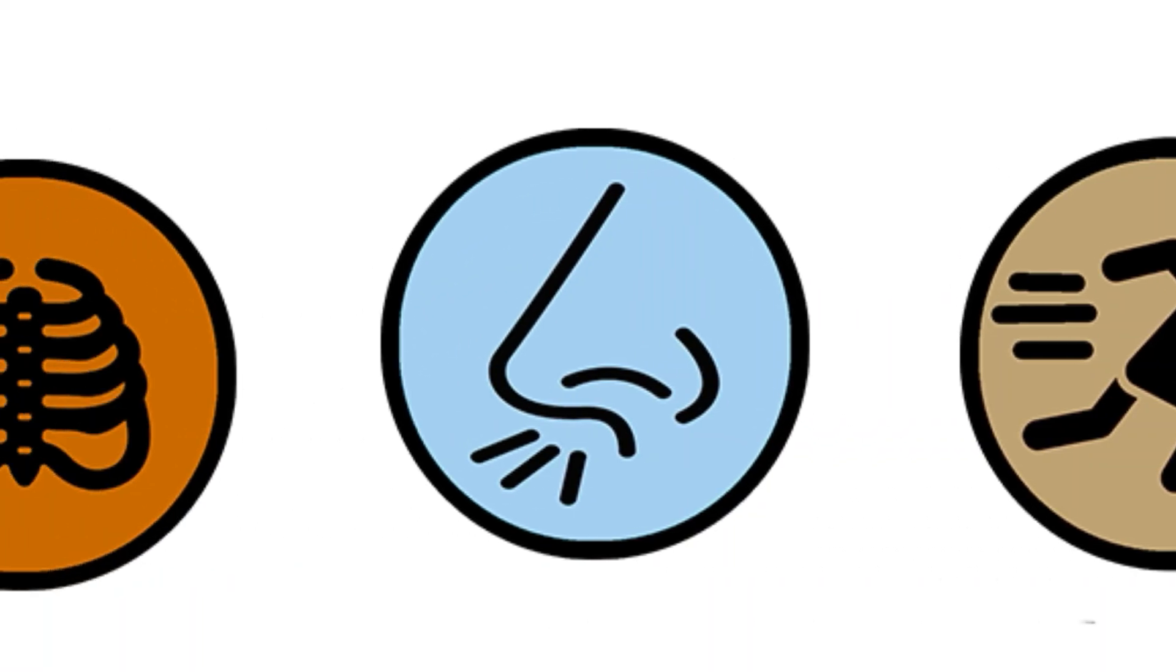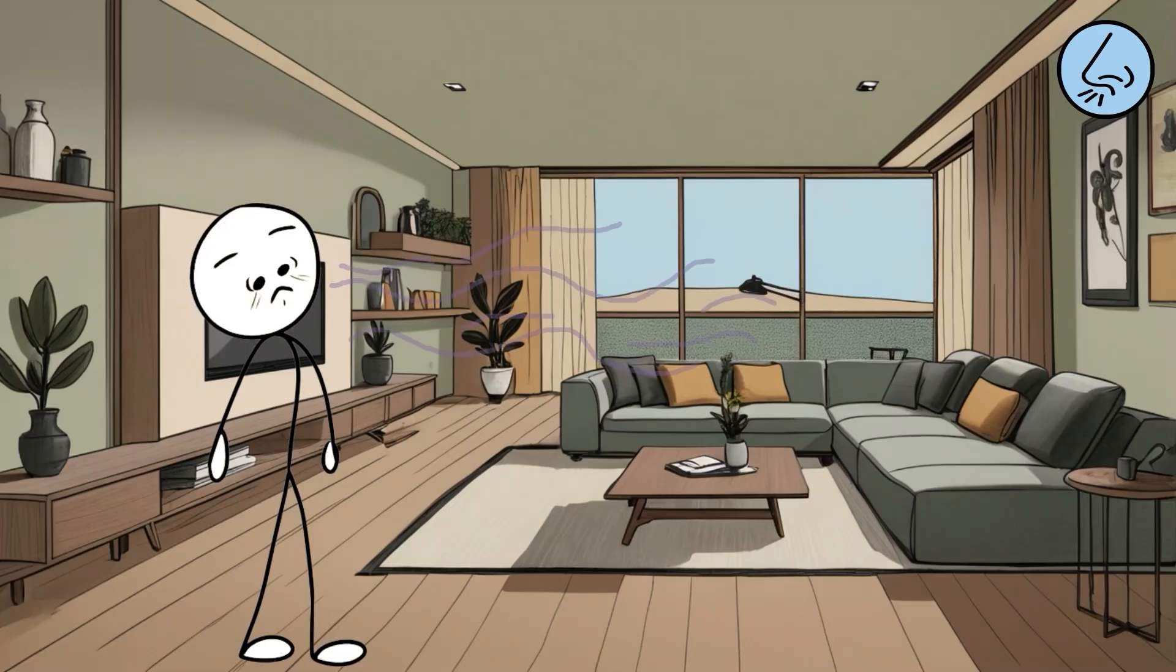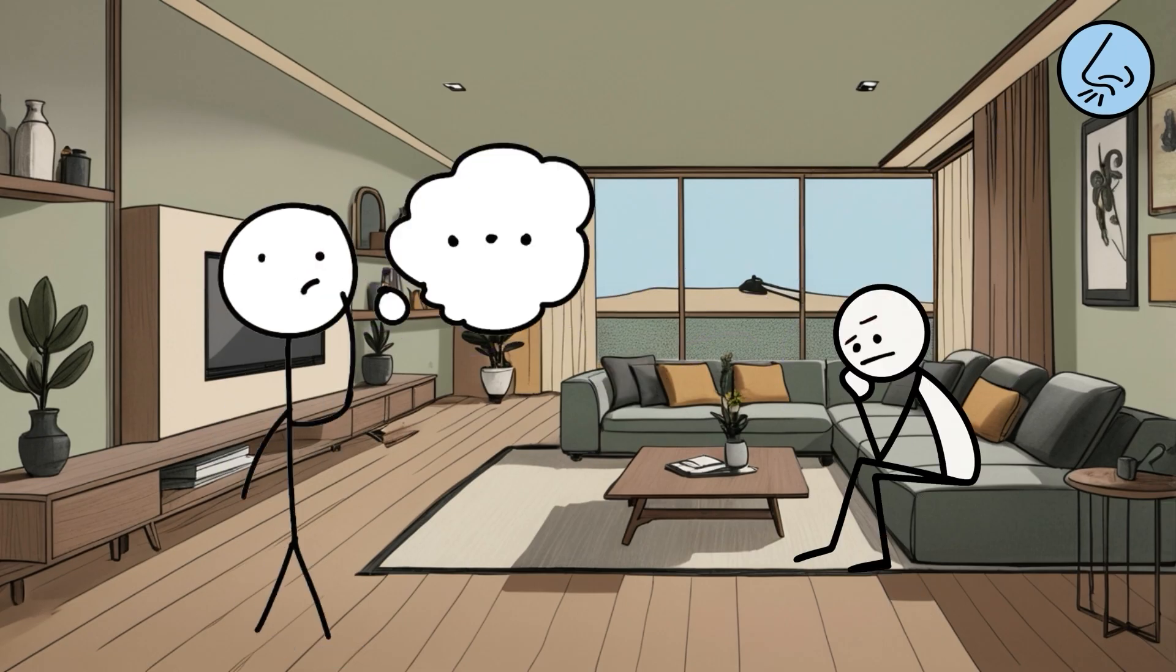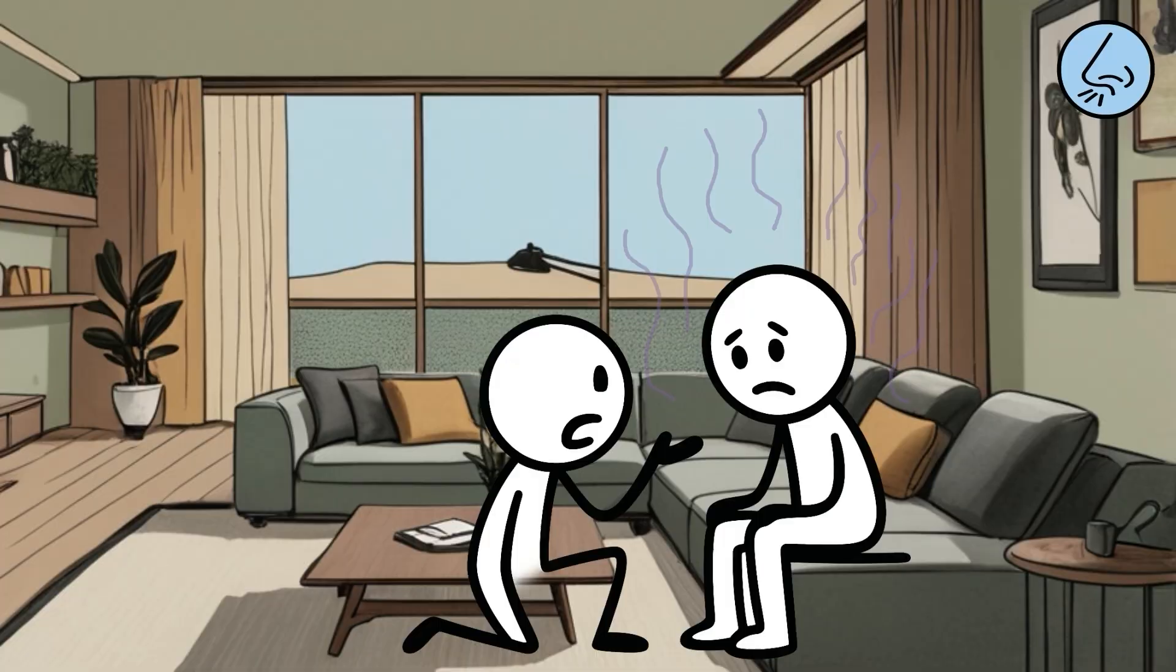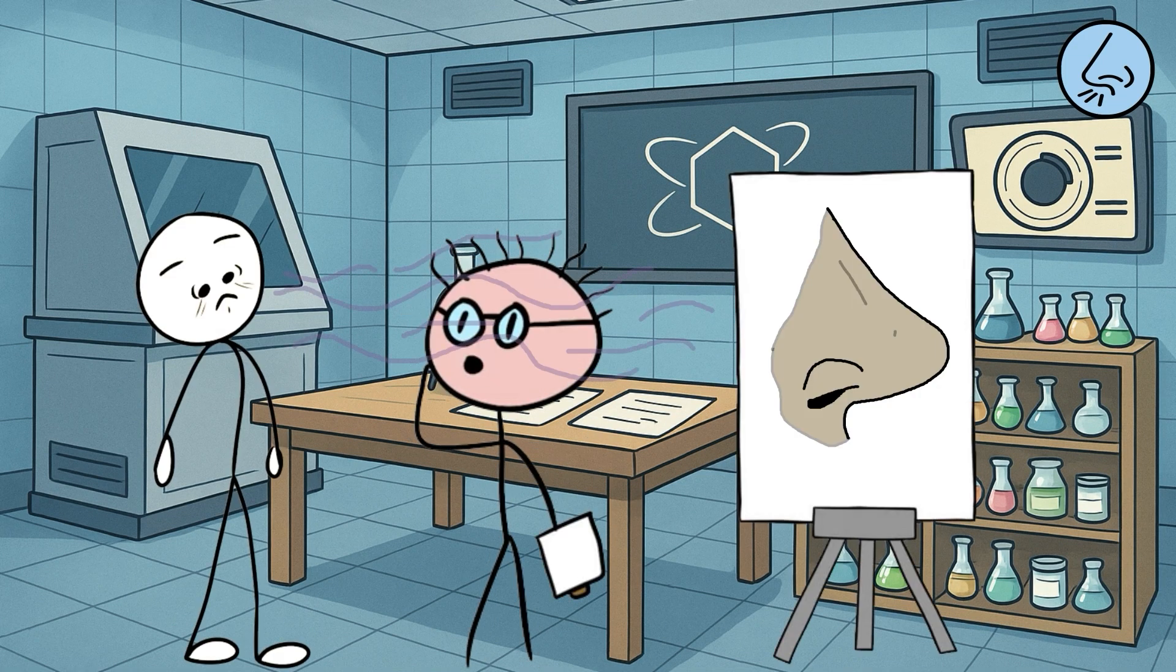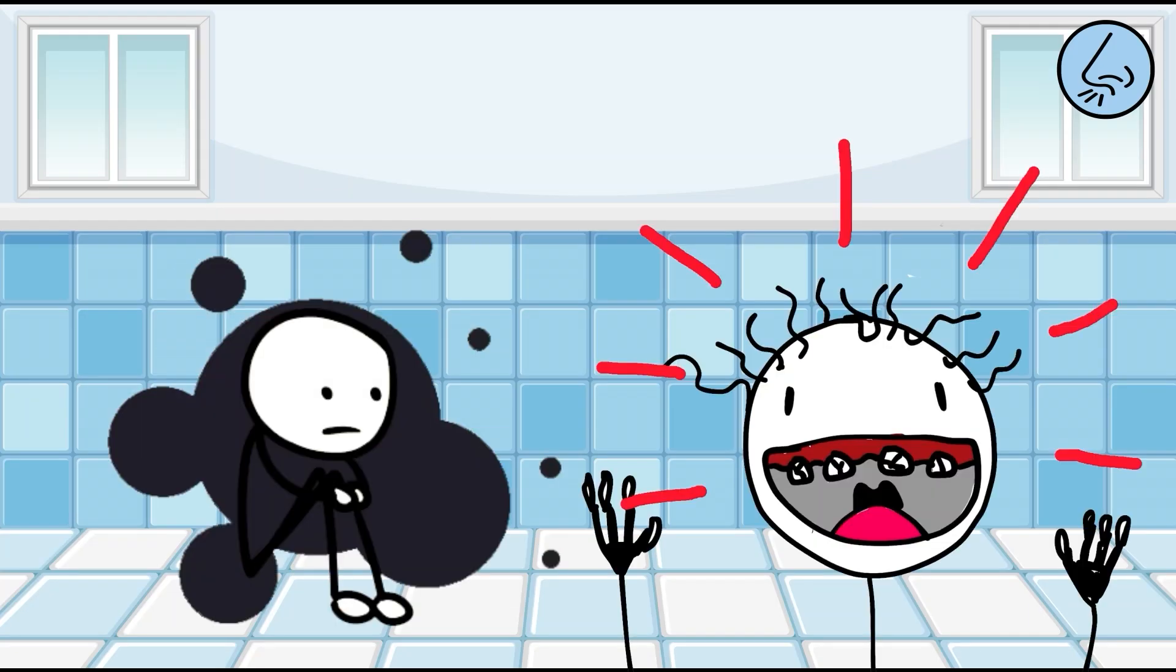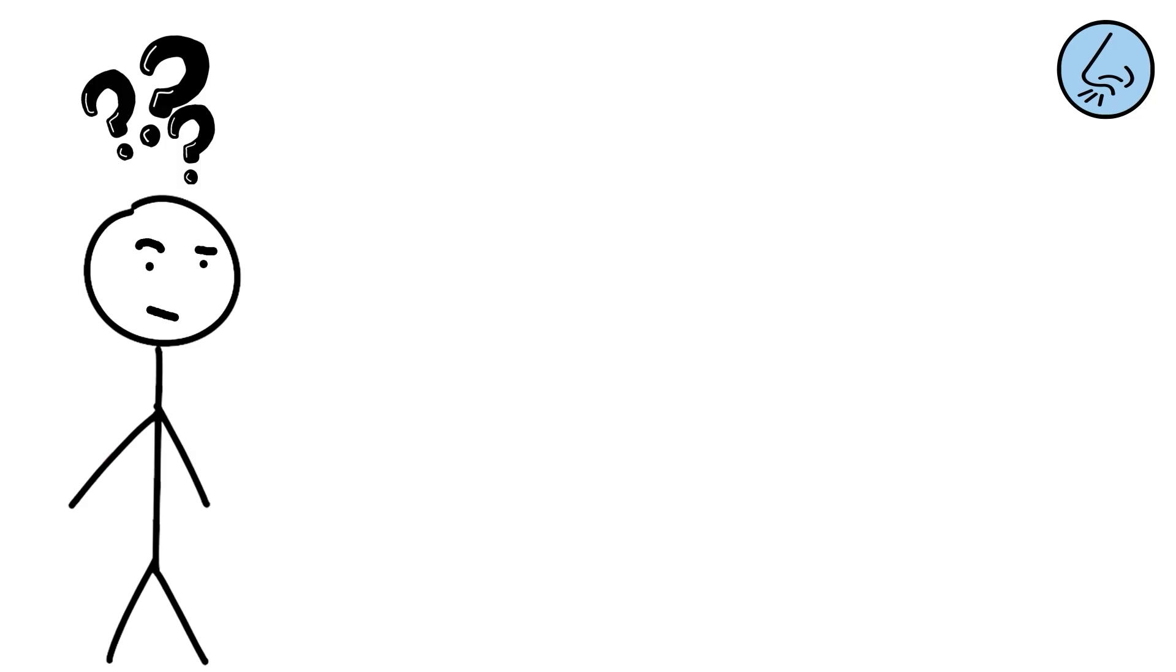People with hyperosmia have a sense of smell that is on another level. For them, everything leaves a trace. Food, humidity, perfumes. They can even detect emotional states through the type of sweat. The cause lies in increased sensitivity in olfactory receptors, combined with more active brain processing. Sometimes it is genetic. Other times, it appears after hormonal or neurological changes. The problem is that this level of perception cannot be turned off.